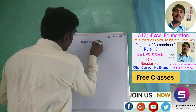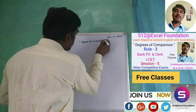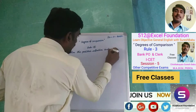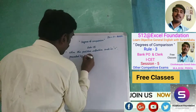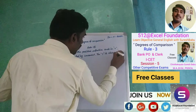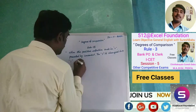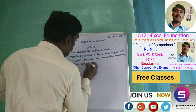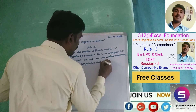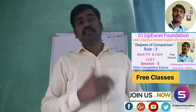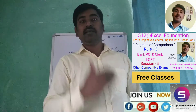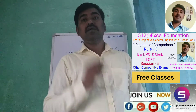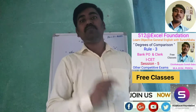Let's look at Degrees of Comparison Rule 3. When the positive adjective ends in 'y' preceded by a consonant, the 'y' is changed into 'i' and '-er' and '-est' are added respectively to form comparative and superlative forms.